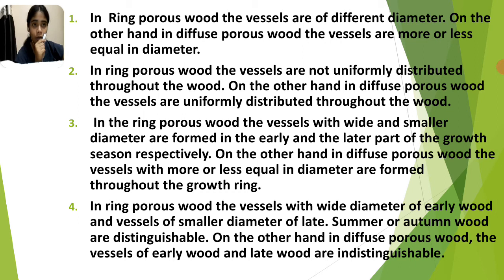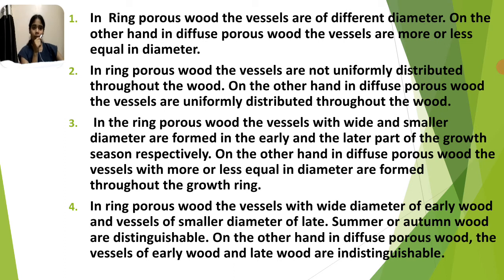Number two: in ring porous wood the vessels are not uniformly distributed throughout the wood. On the other hand, in diffuse porous wood the vessels are uniformly distributed throughout the wood.